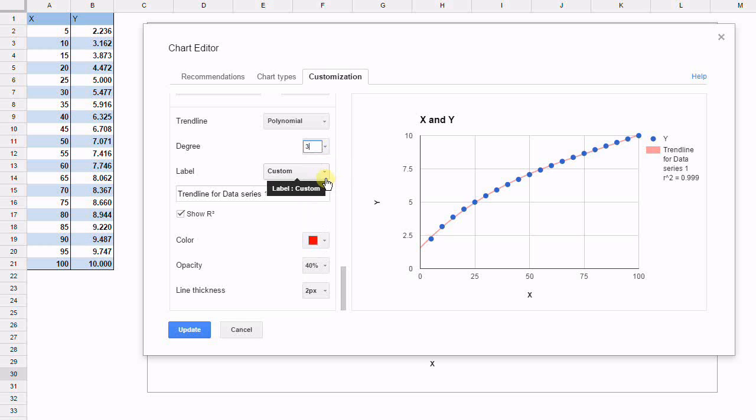But we're going to select 3, which is an x cubed value, an x squared value, an x value, and a constant. And we'll update.